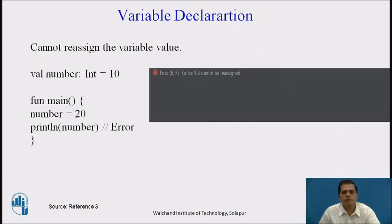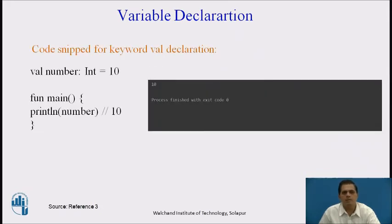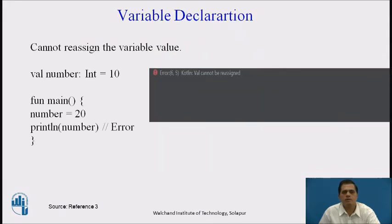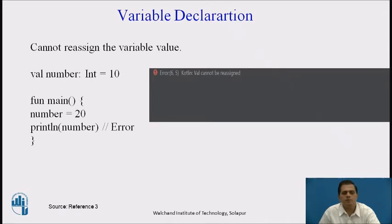Now we see variable declaration using val and what happens when we try to change its value. We have val number: Int = 10. In the main function, I try to reassign the number equal to 20. But in this case Kotlin will give an error, because as per the definition, when we use the val keyword we cannot change the value of that variable. So println(number) will generate an error.